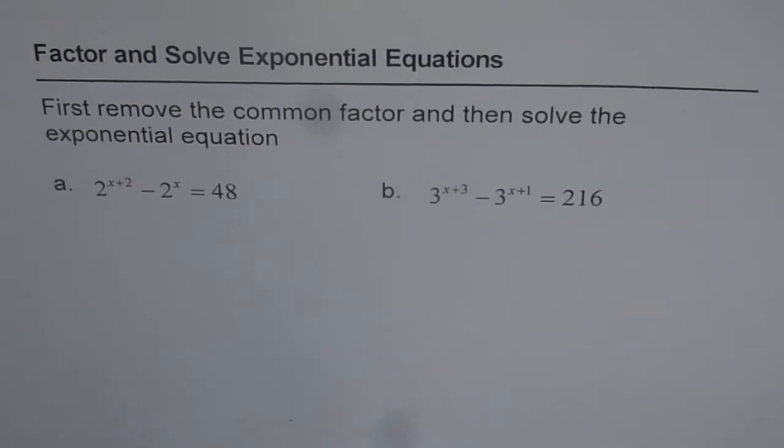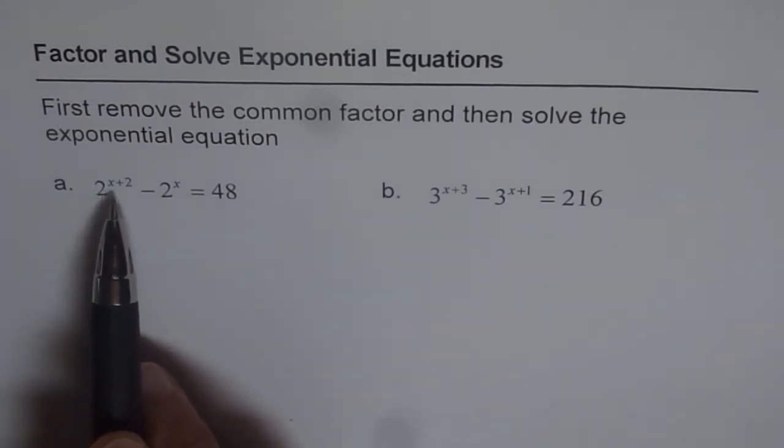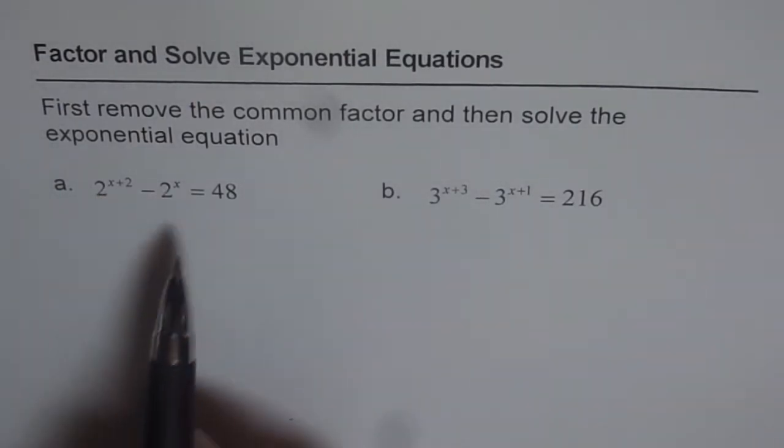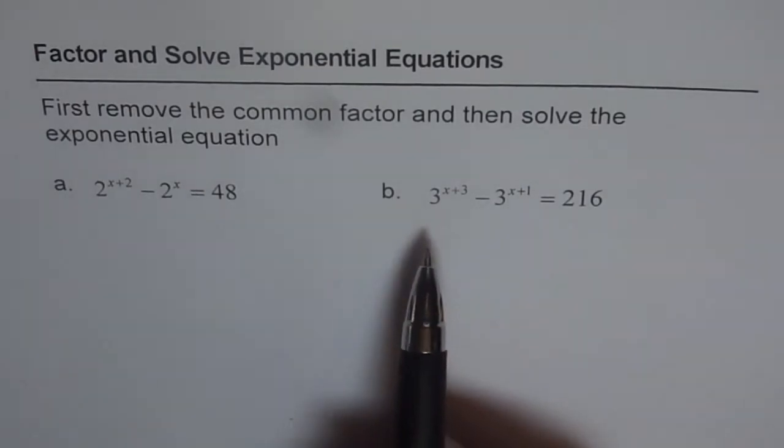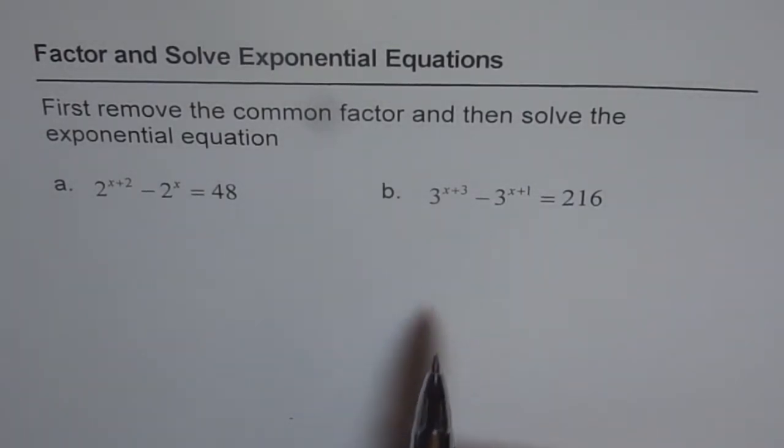So the questions are 2 to the power of x plus 2 minus 2 to the power of x equals to 48, and the second one is 3 to the power of x plus 3 minus 3 to the power of x plus 1 equals to 216.